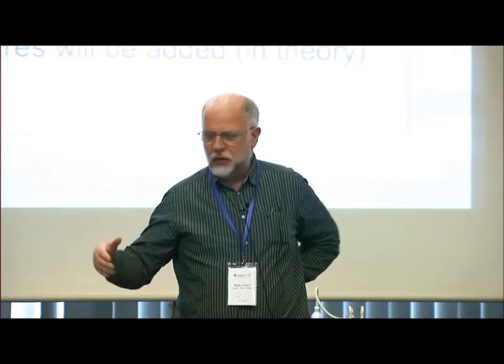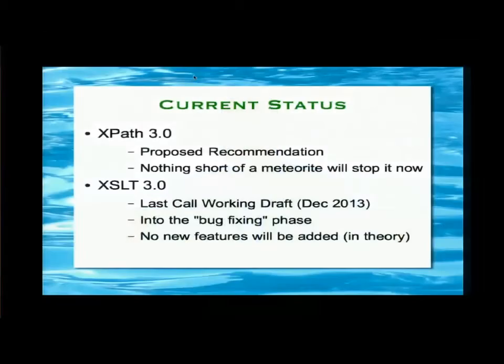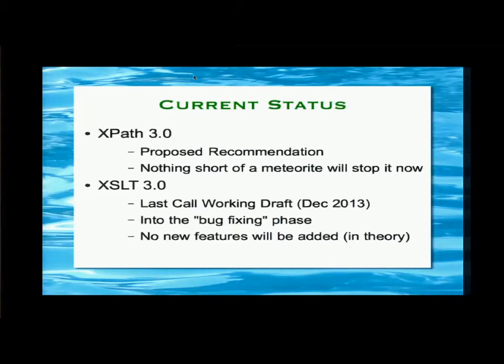As Jonathan described, the current status is that XPath 3 has got ahead of XSLT 3. XPath 3 is now a proposed recommendation. Once you've got the proposed recommendation status, really nothing can stop it apart from either a gross political upheaval, a meteorite, or apathy — the apathy coming because Liam has to ring up all the people who vote and say vote, it's important. So if you're a representative on the W3C and you don't vote, then it might just not happen.